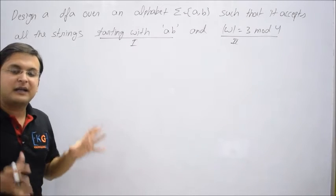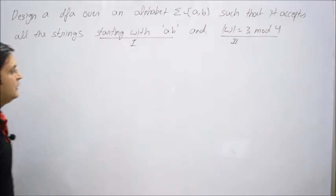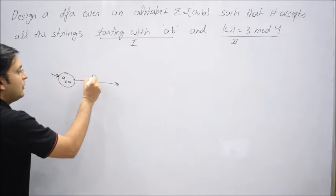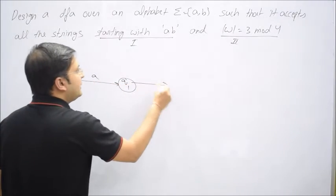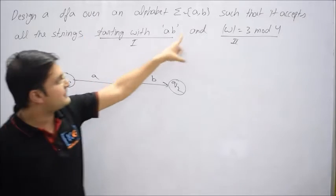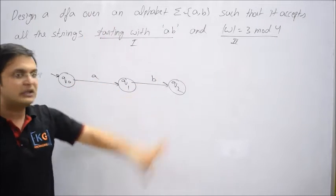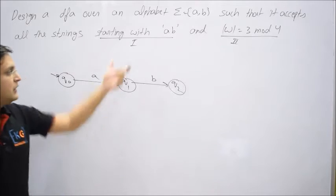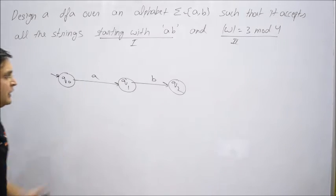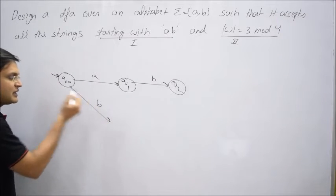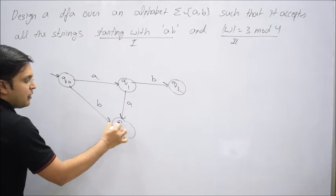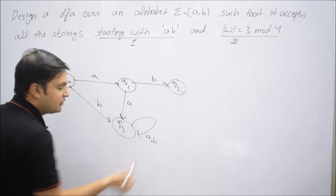Let me design the machine for the smallest string possible. I take an initial state q0. On input 'a' I go to q1, and on input 'b' I go to q2. It says 'and', which means both conditions must be satisfied — there is no choice at all. So if someone asks what happens if it starts with 'b' first, or if after q1 the second symbol is not 'b', there's no option — you have to go to a dead state.